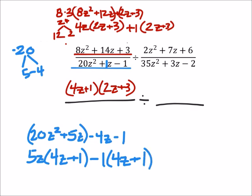See, now I have a 4z plus 1 binomial that I can factor out from both of these. And that's as far as I can take that. 5z minus 1 and 4z plus 1.